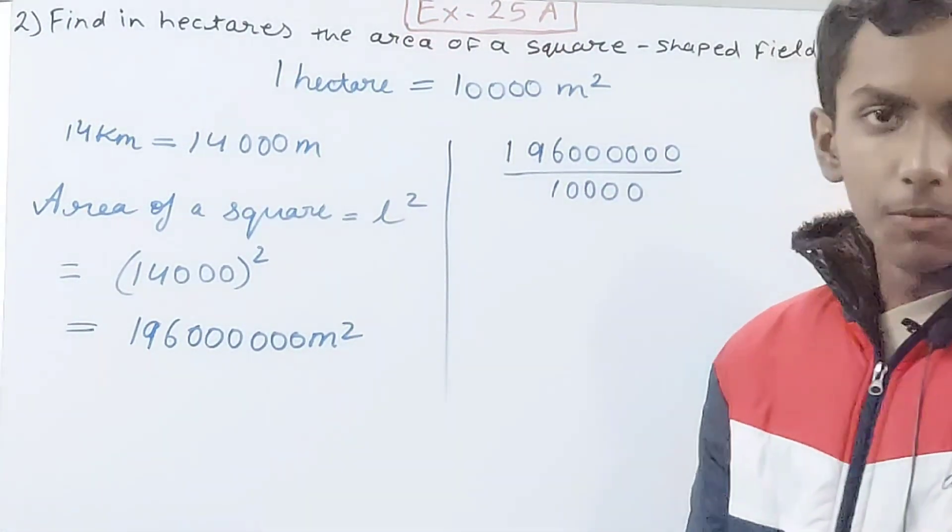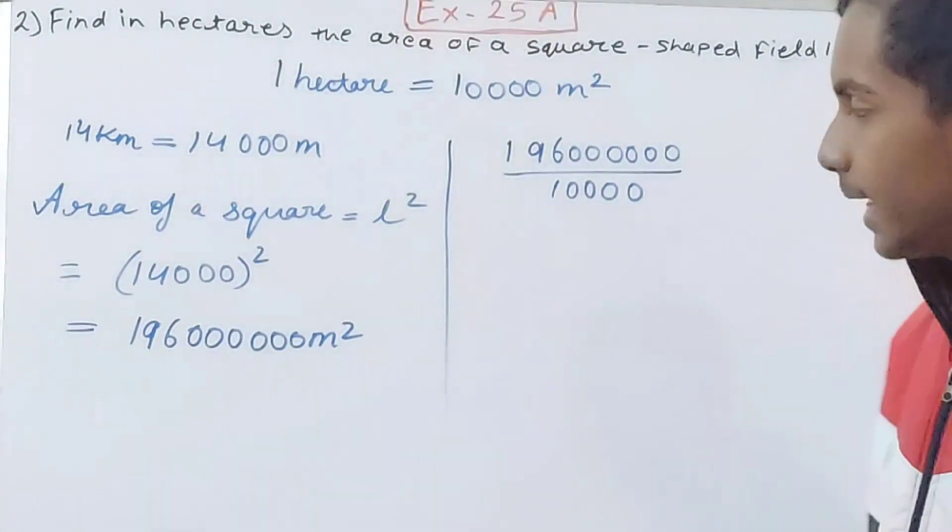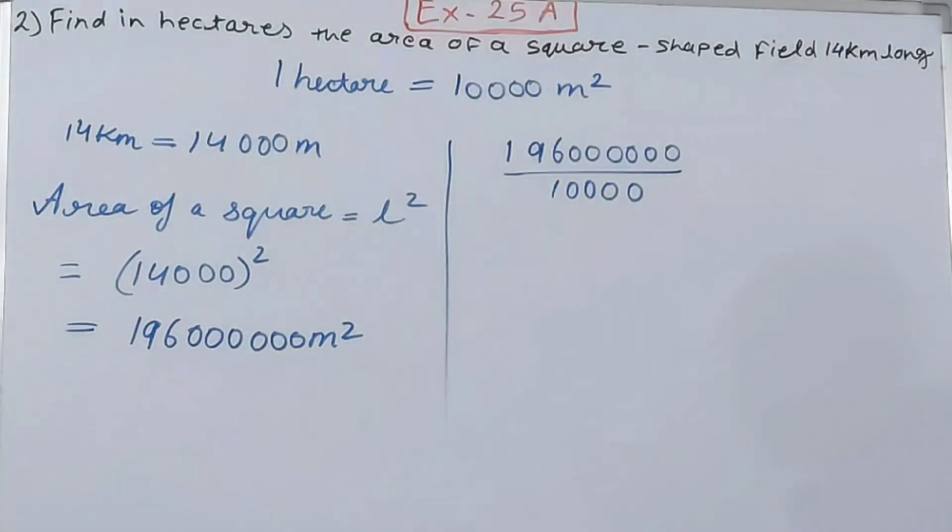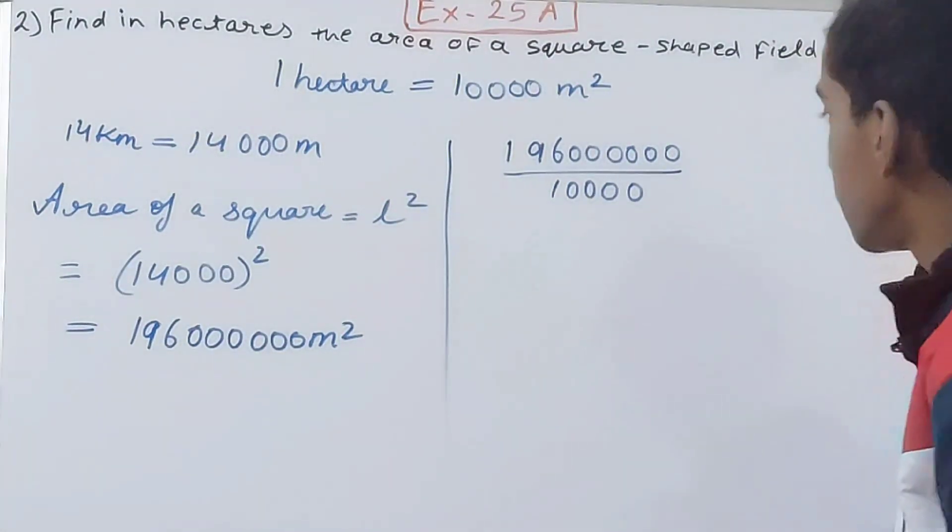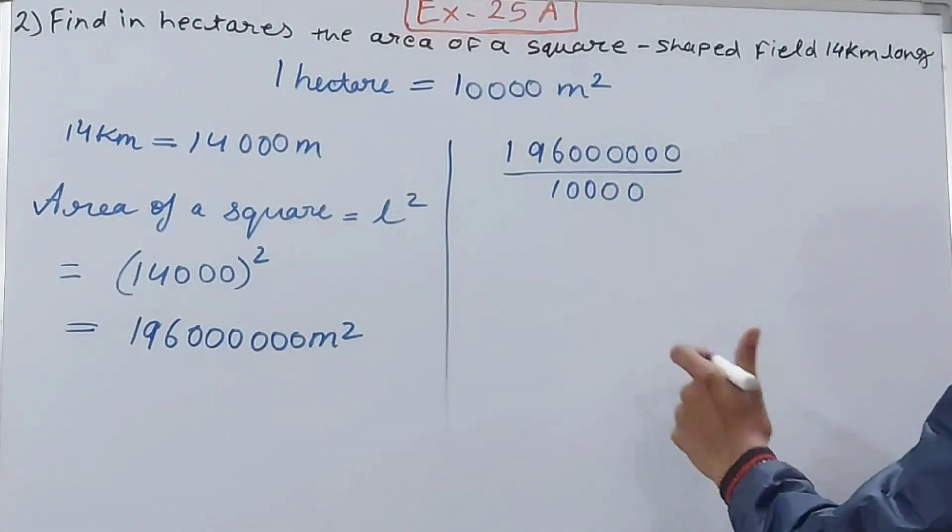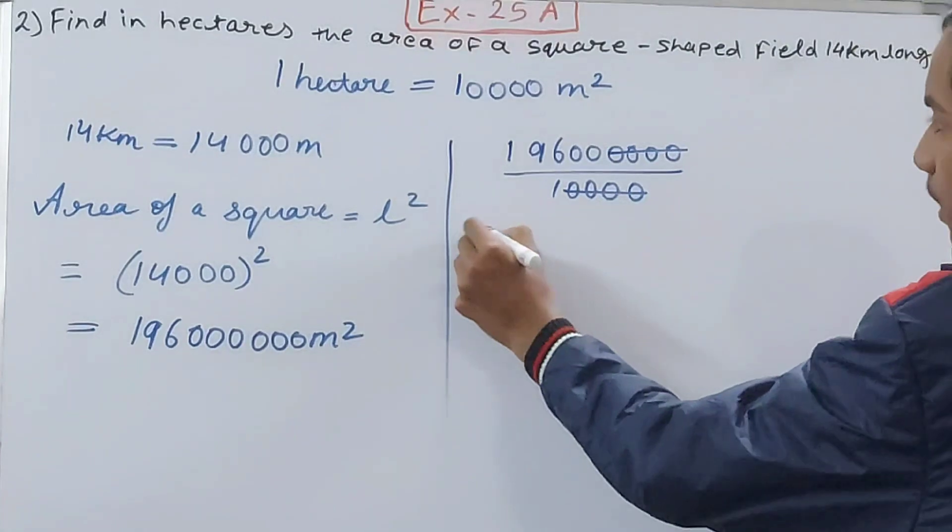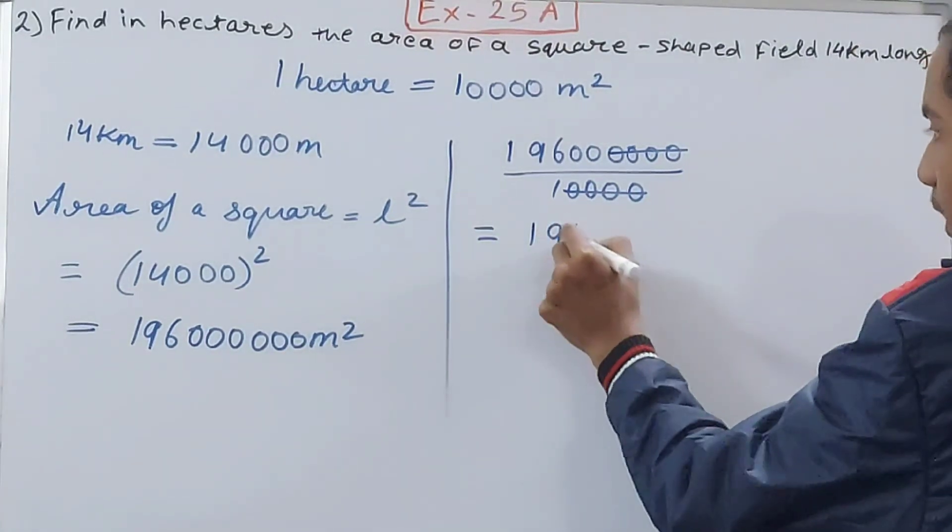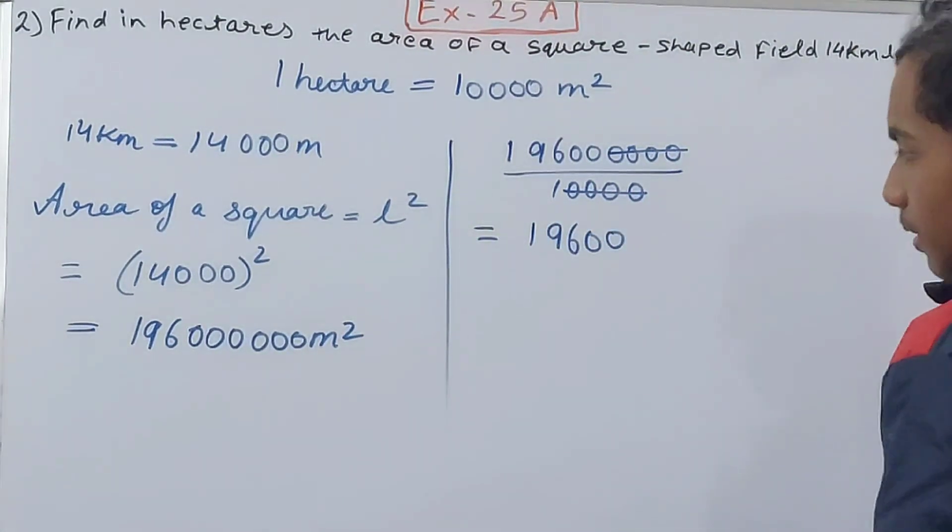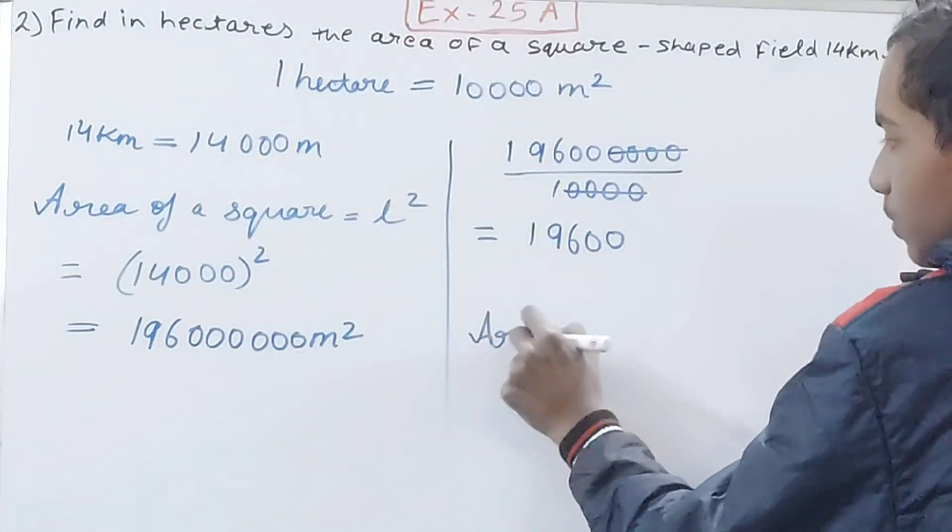Just divide this by 10,000, because 10,000 will make up one hectare. So 196 and six zeros will make up how many hectares? That we have to see. For that we will divide, and you can see four zeros here, four zeros here. I can cancel. I am left with 19,600 here.